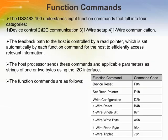The DS-2482-100 understands eight function commands that fall into four categories: one, device control; two, I-Squared C communication; three, One Wire setup; and four, One Wire communications. The feedback path to the host is controlled by a read pointer, which is set automatically by each function command for the host to efficiently access relevant information. The host processor sends these commands and applicable parameters as strings of one or two bytes using the I-Squared C interface.